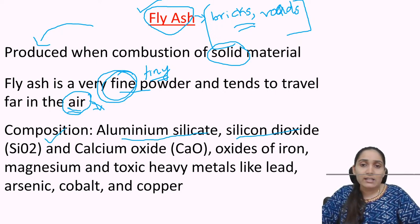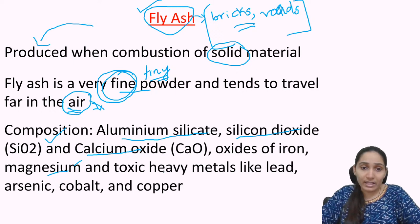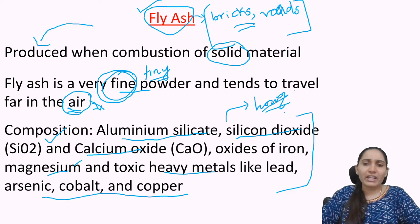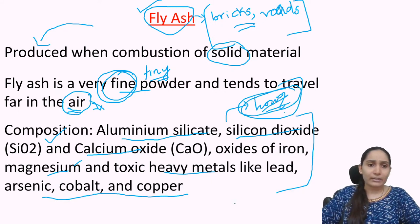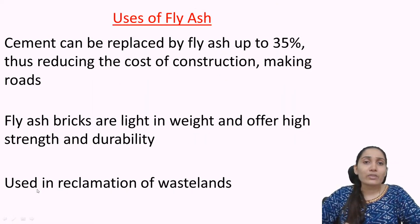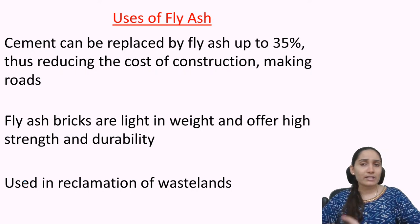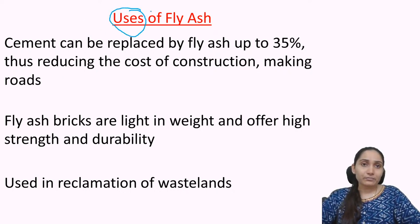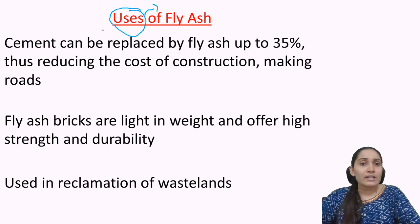The composition of fly ash includes aluminium silicate, silicon dioxide, calcium oxide, oxides of iron and magnesium, and toxic heavy metals like lead, arsenic, cobalt, and copper. Looking at these components, you can understand how dangerous and harmful fly ash is to human health. Even though it is a major pollutant causing large damage to the lungs of human beings, there are various useful applications for fly ash.